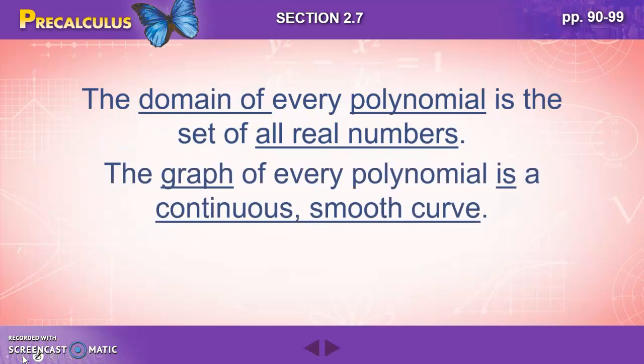The graph of every polynomial is a continuous, smooth curve. So nothing like this, we're talking about curves. There can be all kinds of curves, maybe one like this, maybe one like this, but it's a continuous, smooth curve.